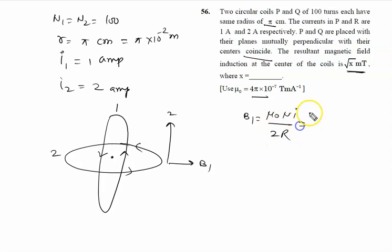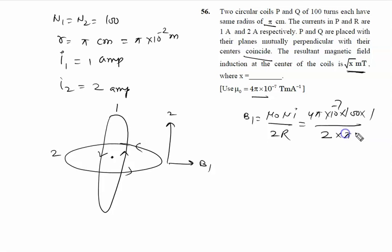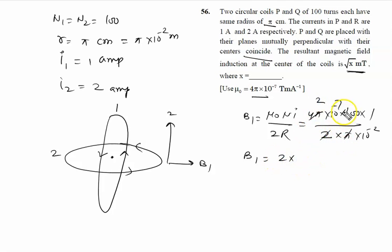Using the standard formula: μ₀ = 4π × 10⁻⁷. Number of turns in both coils is the same, that is 100. Current in the first coil P is 1 ampere, upon 2 into radius π × 10⁻². When we solve, B1 equals 2π, so it becomes 2 × 10⁻⁷ × 10⁴, giving B1 = 10⁻³ tesla.